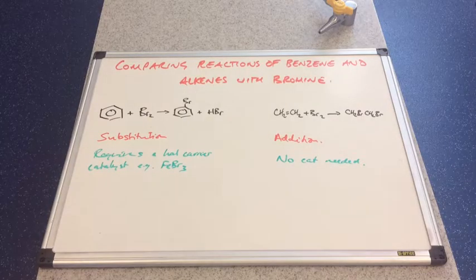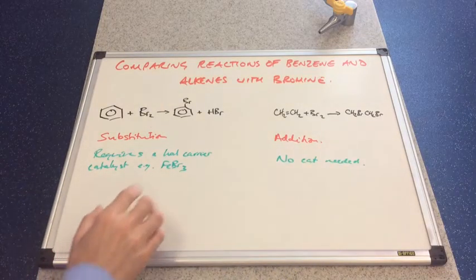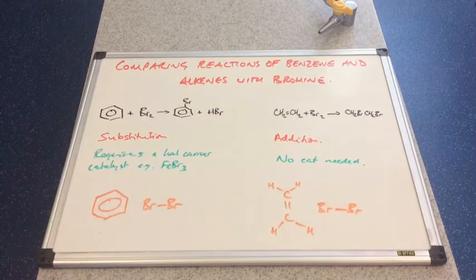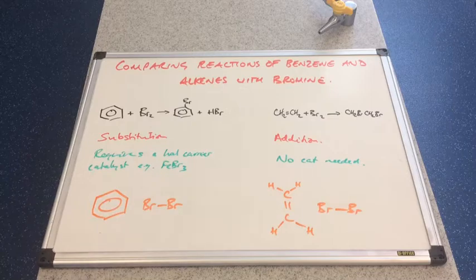So what are the reasons for the difference in reactivity? Why are alkenes far more reactive than benzene rings? The difference in reactivity is all to do with how the pi electrons are arranged in the molecule.